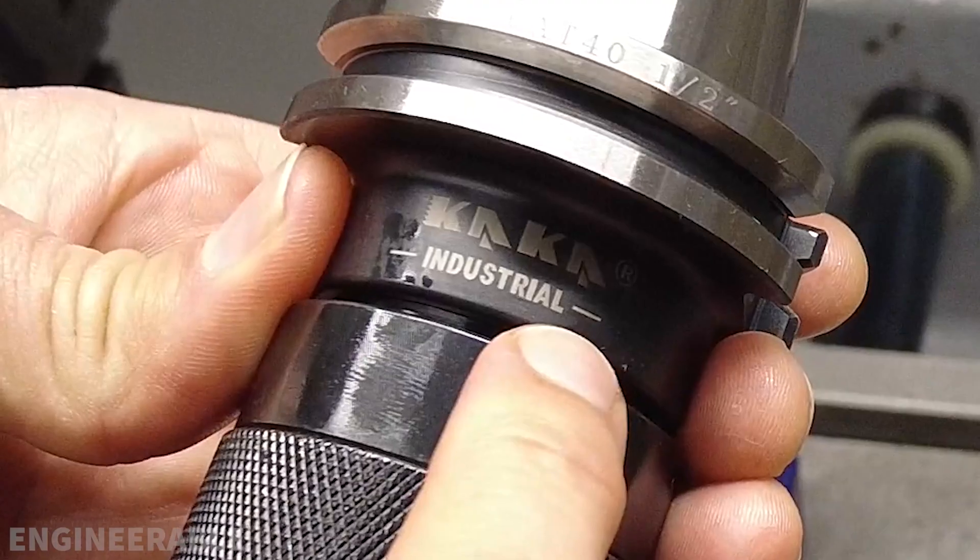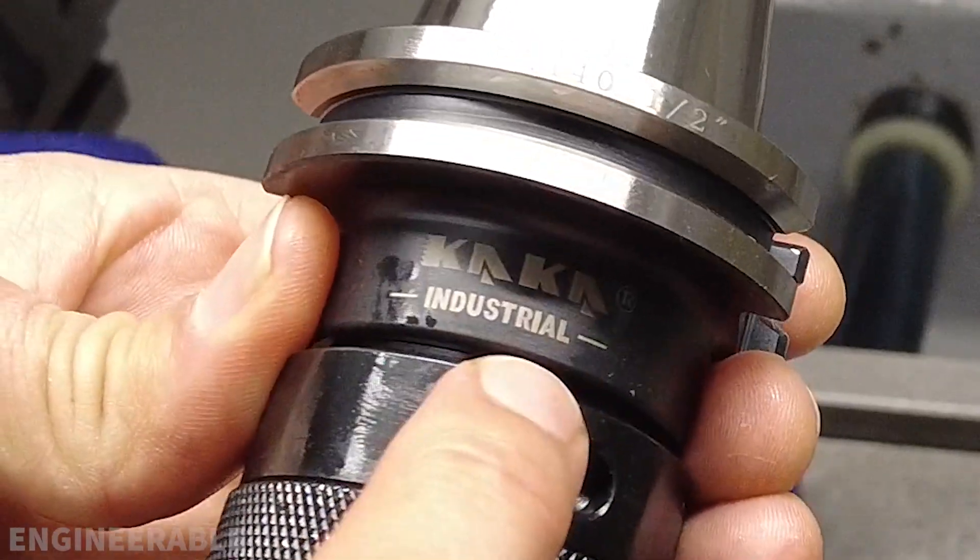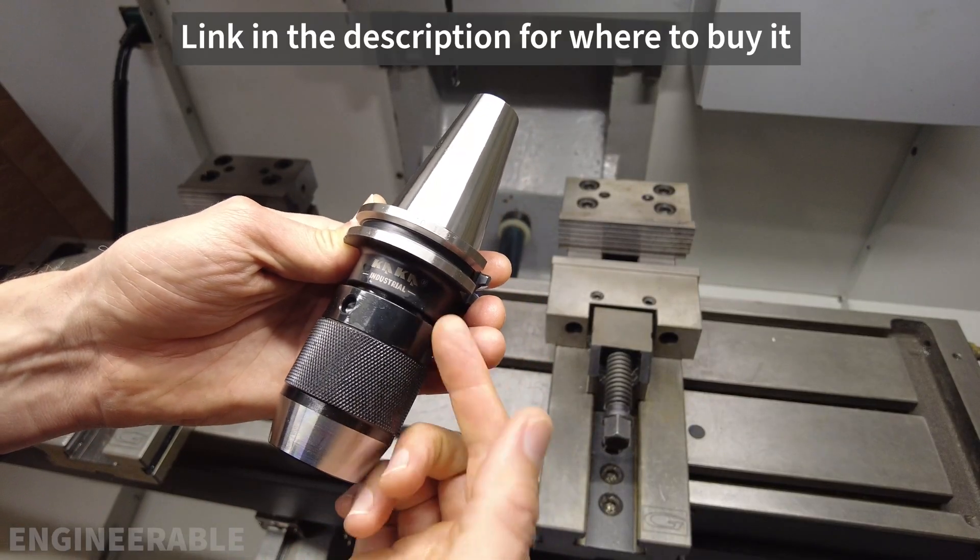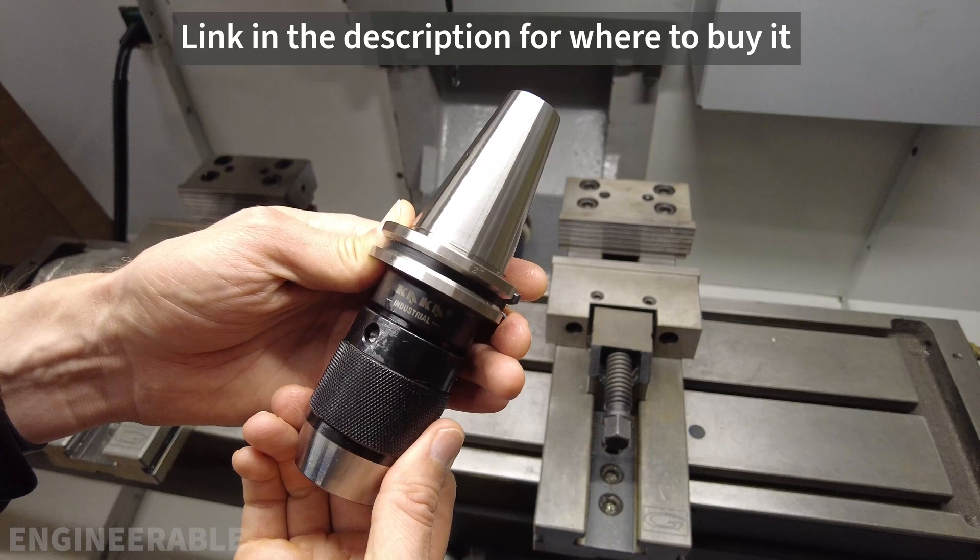It's sold under the brand Kaka Industrial, which is a very unfortunate but funny name for a company. The best part is that this drill chuck was only like $50 including domestic shipping in the USA. That's pretty hard to beat even if the run-out is not going to be as good as a much more expensive chuck.